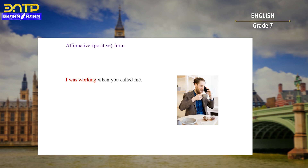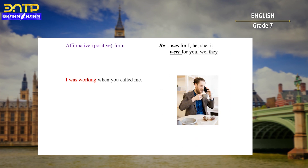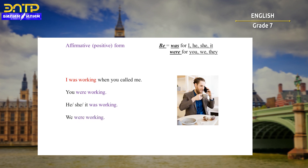Let's look at some rules for building affirmative or positive forms of past continuous. For example: 'I was working when you called me.' You can change this part for all other pronouns, but pay attention to the verb to be in past simple for singular and plural: 'You were working', 'He/She/It was working', 'We were working', 'They were working'.